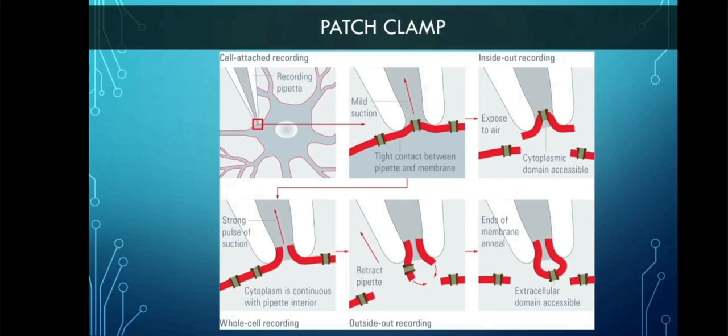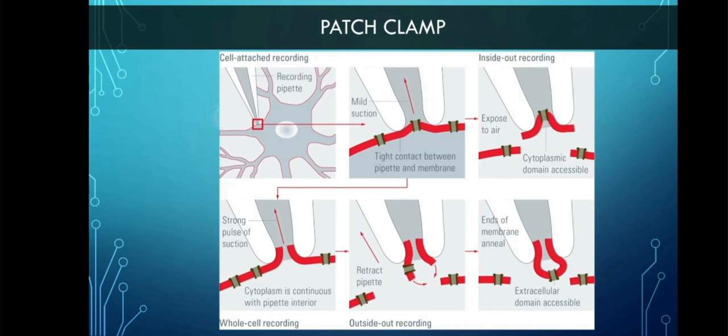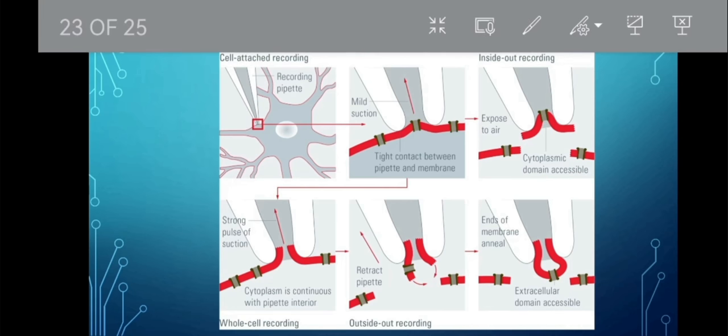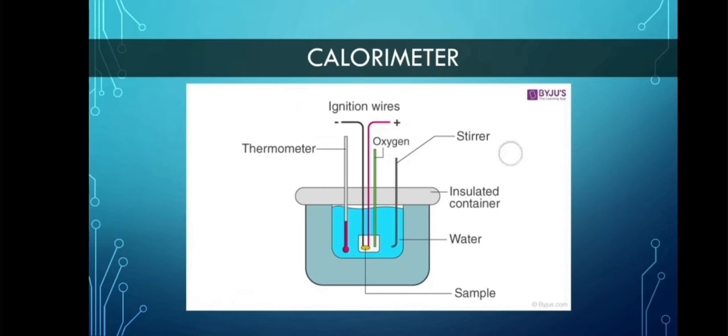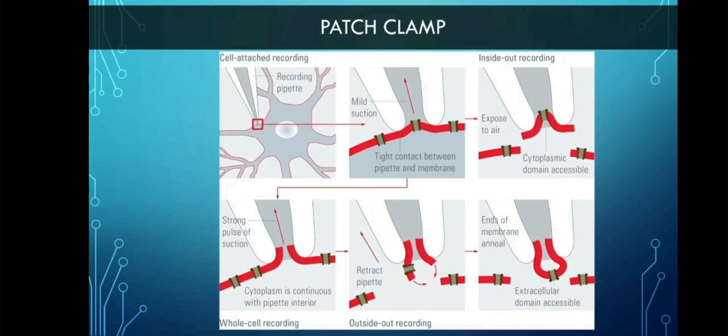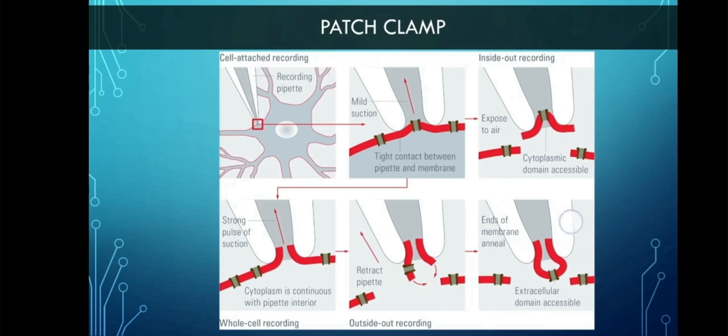As you can see in the image, that is a nerve, and that is the pipette. The pipette's tip has no pointed end because the end is supposed to be suctioning that part of the neuron. In the second image, you can see a tight contact between the pipette and the membrane. They cut through the cytoplasmic domain so it will be accessible. A strong pulse of suction makes the cytoplasm continuous with pipette interior. Then the pipette retracts back to the surface and the end of the membrane anneal. That's how patch clamp works.